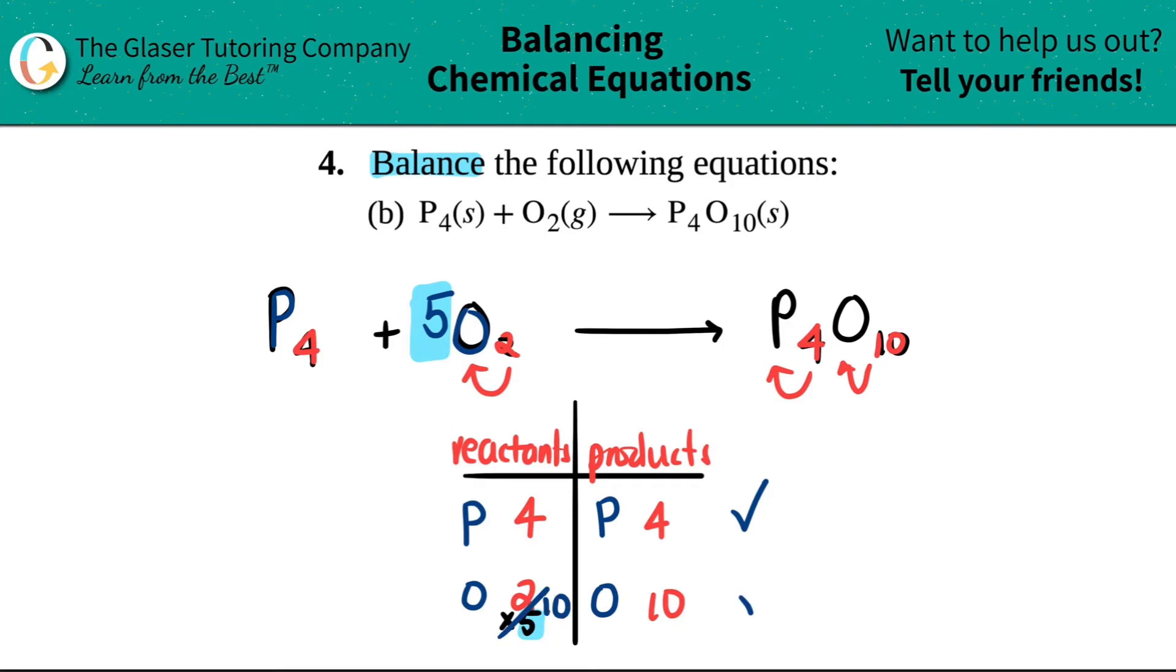And now I just say, okay, 10 and 10, that's balanced. And oxygen was the only element in this molecule. So I don't have to change any other numbers. And four and four, 10 and 10, we're done. It's as simple as that, guys. So you have one P₄, you have five O₂s, and one P₄O₁₀. And that's your final answer.